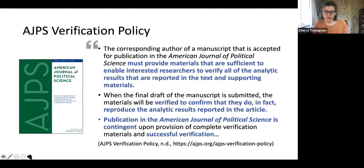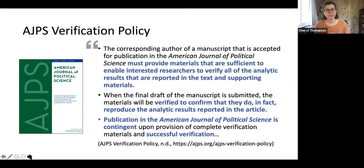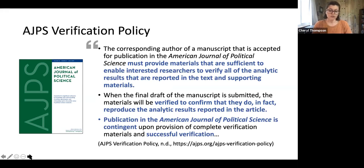In the political science community, there's been an ongoing debate for 20-plus years about a computational reproducibility standard. In response, in 2015 the American Journal of Political Science adopted a verification policy where authors whose manuscripts received conditional acceptance must provide research materials required to verify their results, and publication in AJPS is contingent on passing verification. AJPS has contracted with third parties to conduct the verification checks. For quantitative analyses, verification is carried out by the Odum Institute; for qualitative analyses, it is handled by the Qualitative Data Repository at Syracuse University.